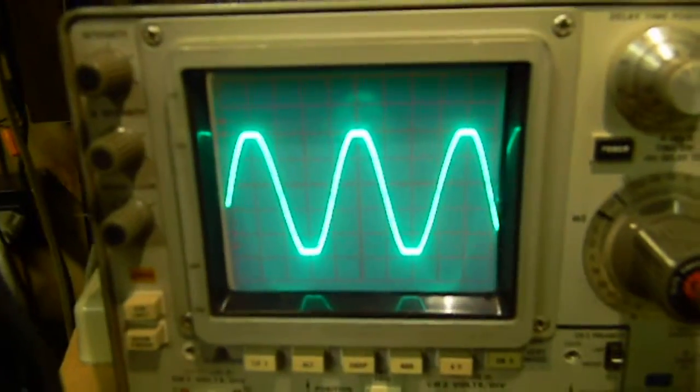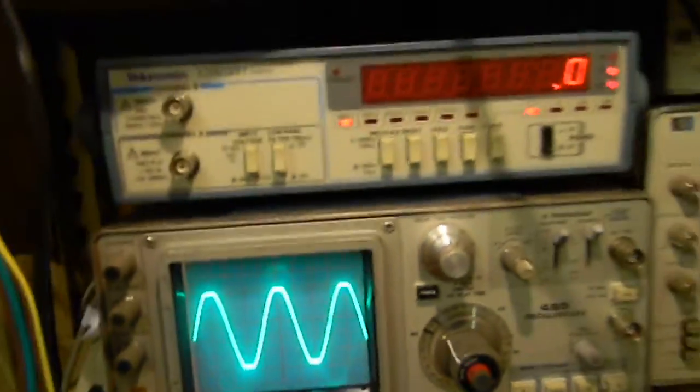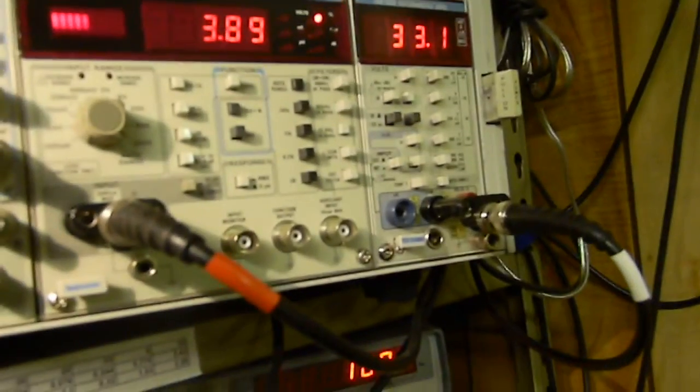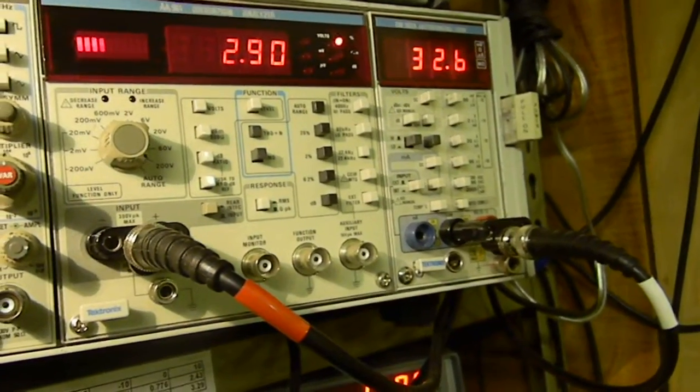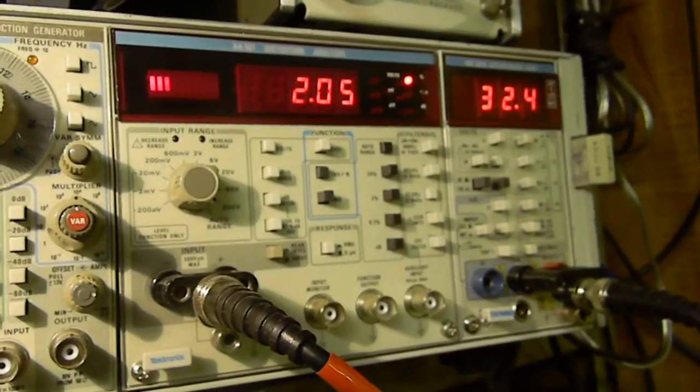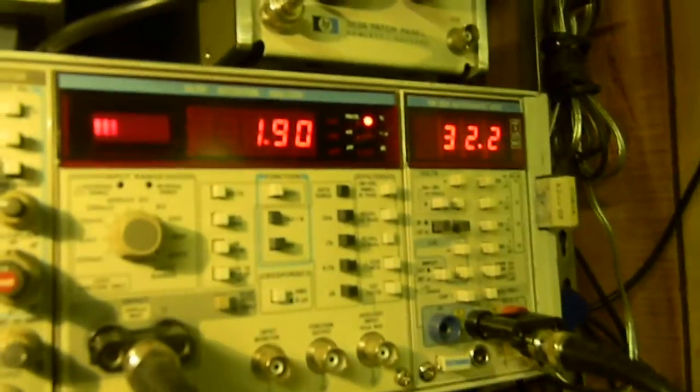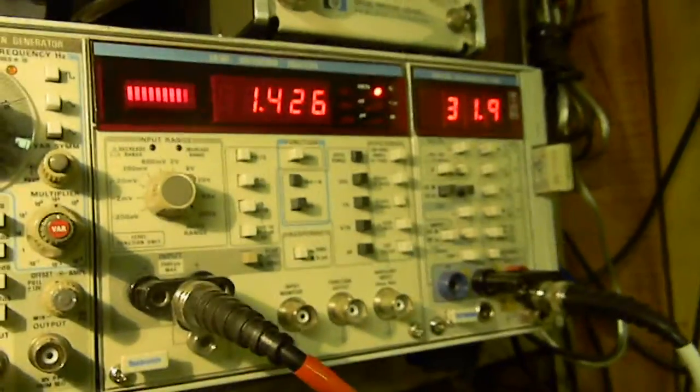31.8 squared divided by 8 is 126 watts, and both channels are operating at the same time. You always want to do that. Here's our left channel, there's our right channel. Right channel's clipping a little bit more, so we could back it down and adjust it slightly. What I'm doing is adjusting the controls over here to match them up.